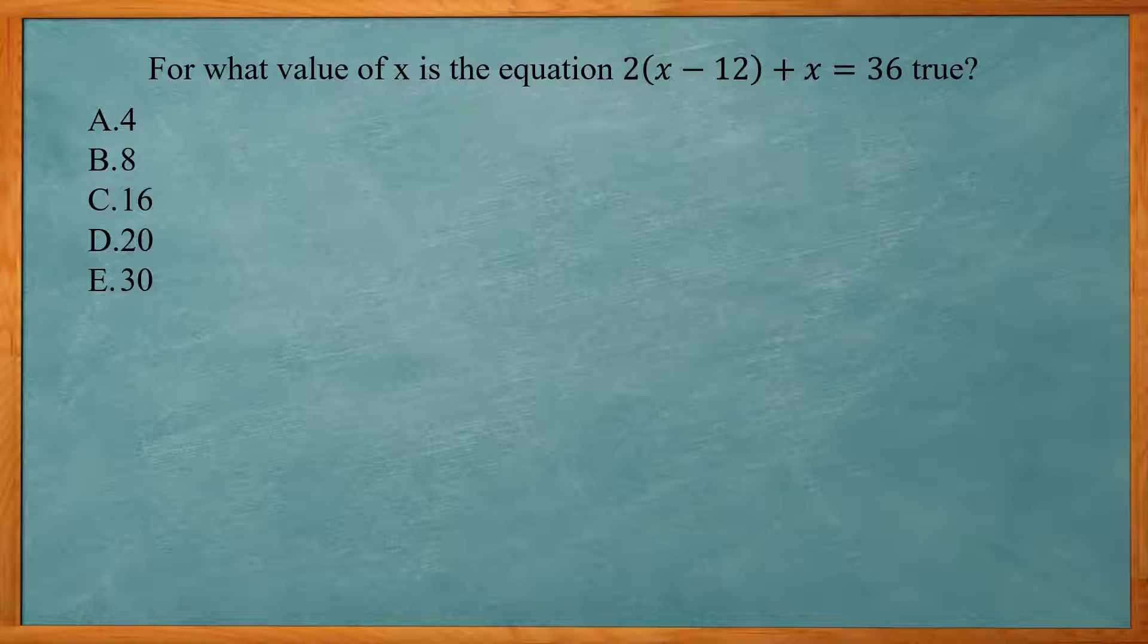We could solve this algebraically and get the x by itself, or you can just simply plug in the answers and see which one works out. So if we look at the first one, 4, I can do 2 times 4 minus 12 plus 4. And you can just put that on your calculator, and if you do that, you get negative 12.